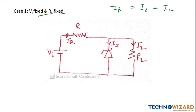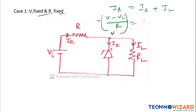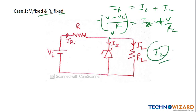From here we can also write the voltage across the zener diode. We can write: IR = (Vi − Vz) / R = Iz + IL, where IL = V / RL. From this we can find Iz, the zener current. This is how we can analyze the circuit when Vi is fixed and RL is fixed in a zener diode voltage regulator design.